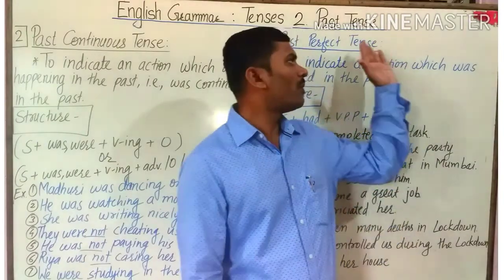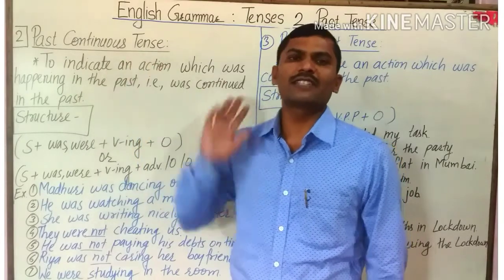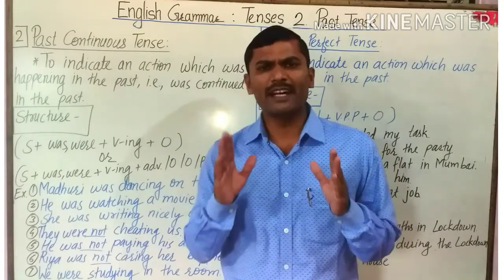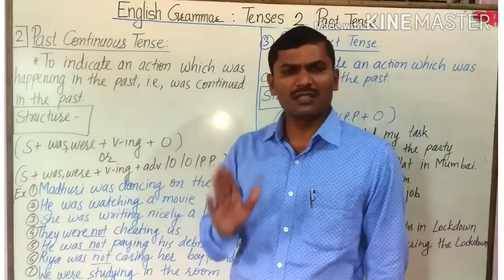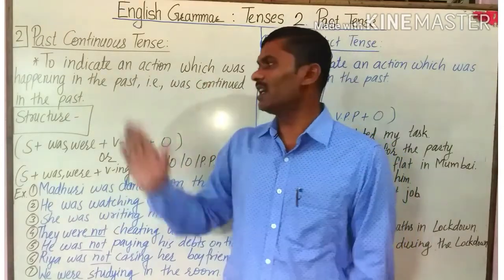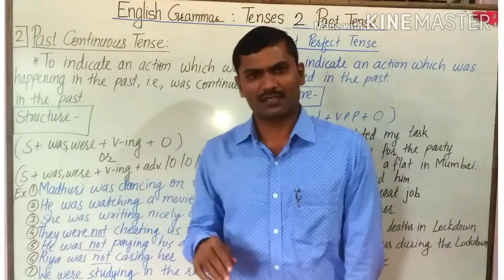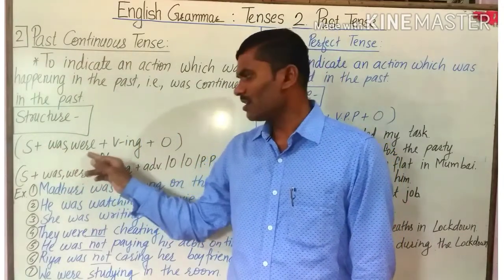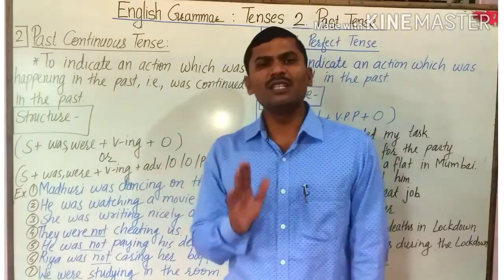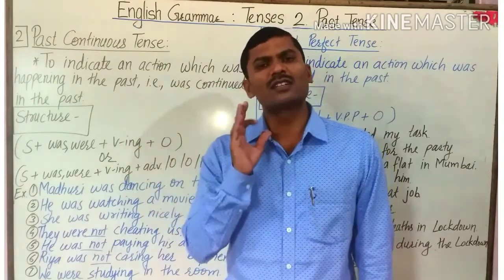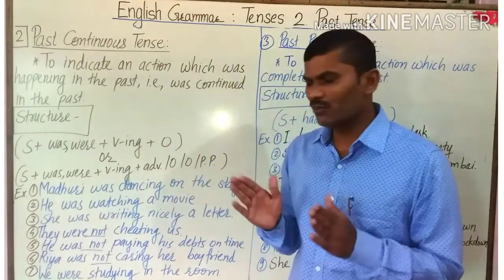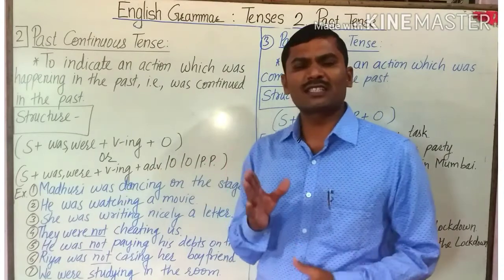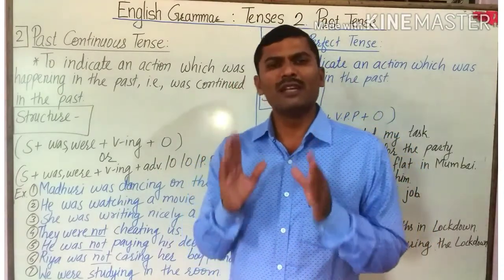The second subtype of past tense is past continuous tense. Past continuous tense is used to denote actions which were happening and continuing in the past. The structure is: subject plus was/were plus V-ing plus object, where V-ing means the present participle form of the verb. A modified formula includes adverb, object, another object, or prepositional phrase as needed.